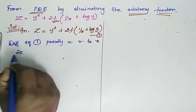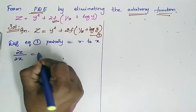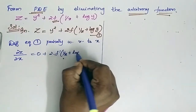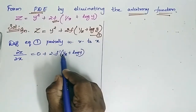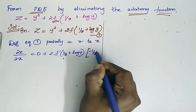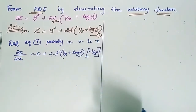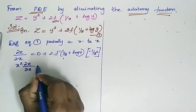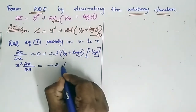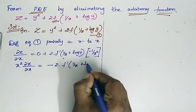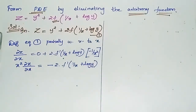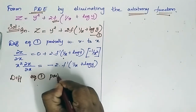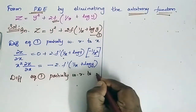So what we get is ∂z/∂x equals 0 plus 2 into f dash of (1/x + log y). When you differentiate 1/x you get minus 1/x squared. Now simplifying, x squared ∂z/∂x is equal to minus 2 into f dash of (1/x + log y).